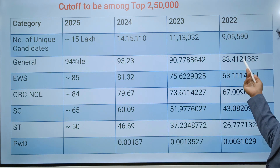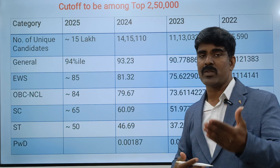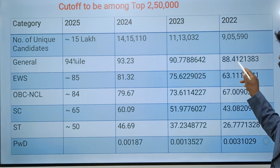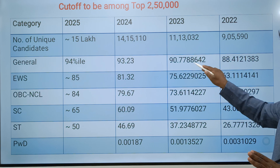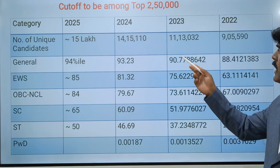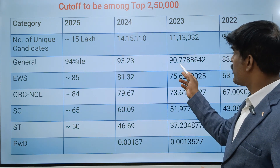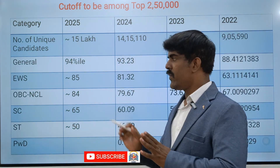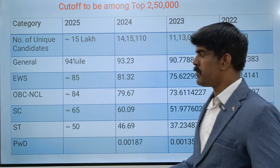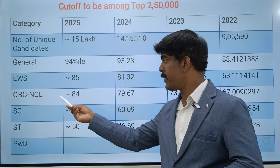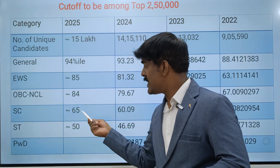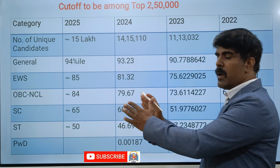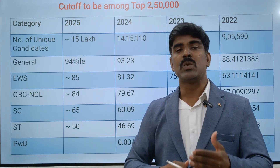For the General category, in 2022 the cutoff was 88.41 percentile; in 2023 it was 90.77 percentile; in 2024 it was 93.23 percentile. So from 2022 to 2024 it increased by about 3 percentile points each year. We are expecting the 2025 General category cutoff to be around 94 percentile. For OBC Non-Creamy Layer: 84 percentile. SC: 65 percentile. ST: 50 percentile. The main reason for the rising cutoff is the 2–3 lakh increase in student strength each year.